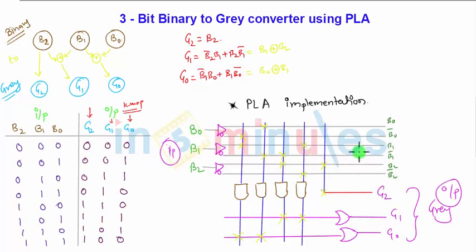This is the programmable AND matrix and OR matrix. You can have it here as AND matrix and this is the OR matrix. Both are programmable, hence it is a PLA implementation of 3-bit binary to gray. You can also convert 3-bit gray to binary with the help of these kind of questions. For more ideas and videos, stay tuned to In 5 Minutes and thank you for watching.